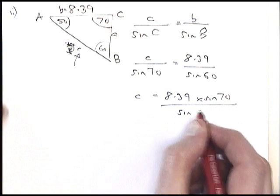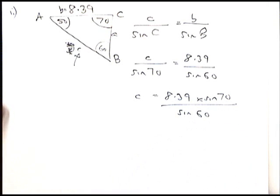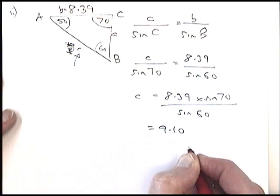So it's a case of working that value out. And if I do that, I get 9.10.